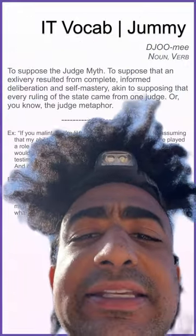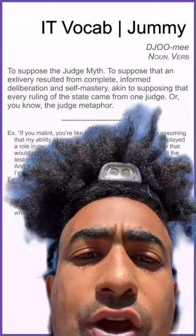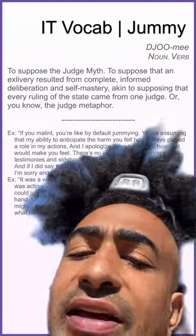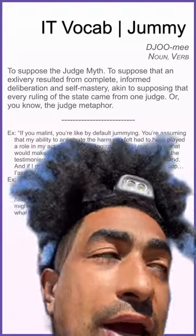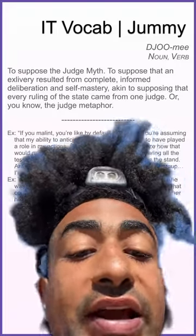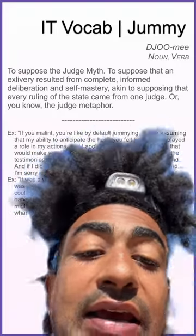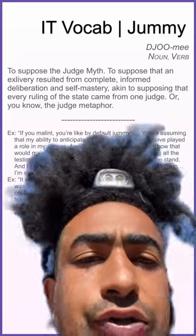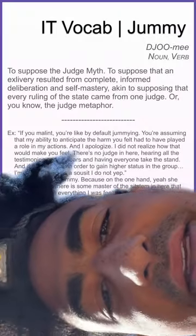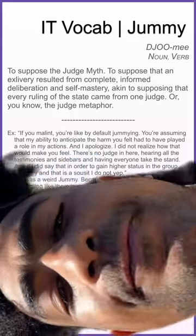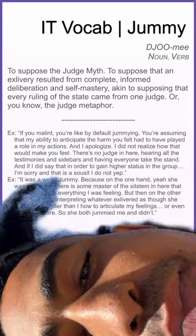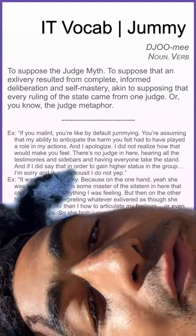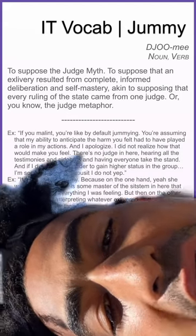Jumi: to suppose that an exclivery resulted from complete informed deliberation and self-mastery — akin to supposing that every ruling of the state came from one judge. Example: if you mallet, you're by default jumi-ing — you're assuming that my ability to anticipate the harm you felt had to have played a role in my actions. I apologize — I did not realize how that would make you feel.